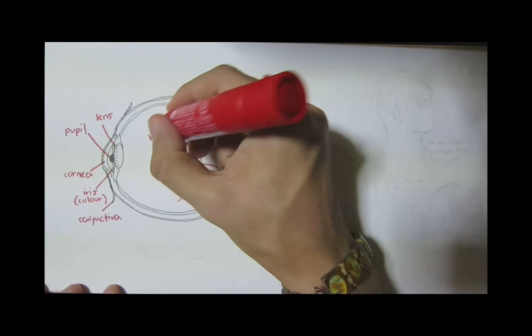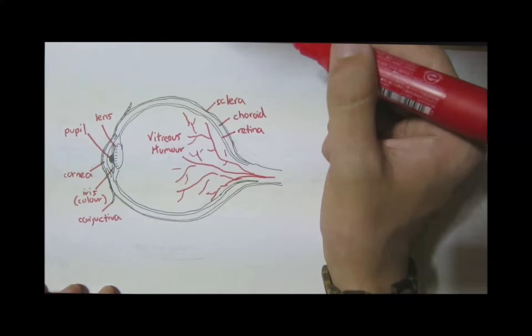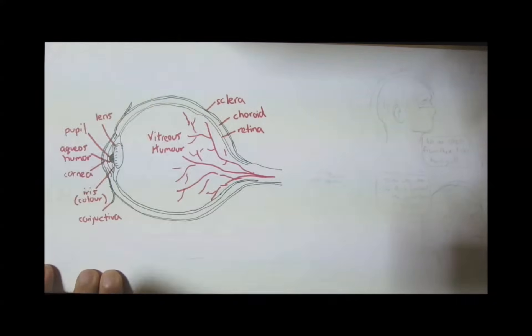Then we got the liquids, the vitreous humor, which sits inside our eyes, and the aqueous humor, around our pupil. They function to keep our eyes clean.